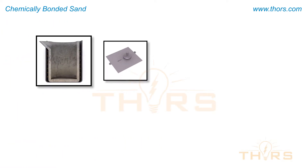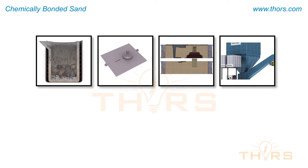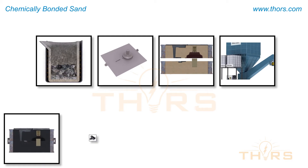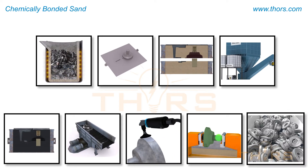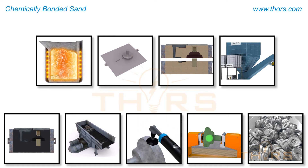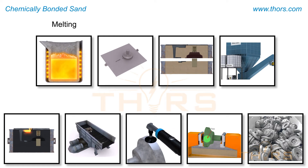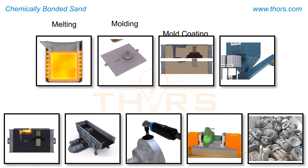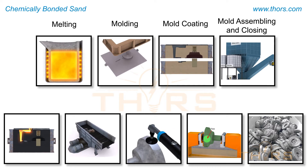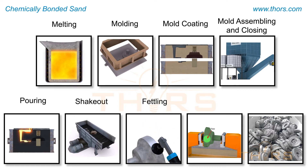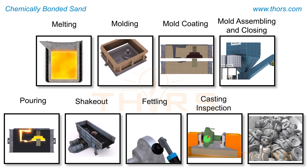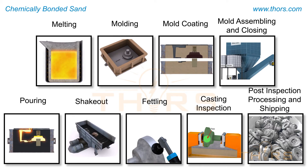In a bonded sand foundry, several different sub-processes have to be carried out in a carefully synchronized manner to produce a good quality casting. These sub-processes are melting, molding, mold coating, mold assembling and closing, pouring, shakeout, fettling, casting inspection, and post-inspection processing and shipping.